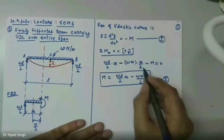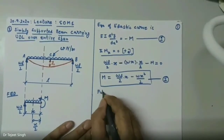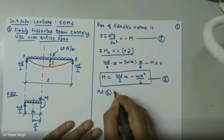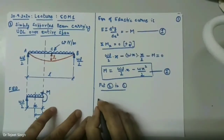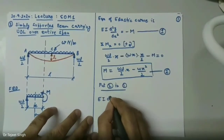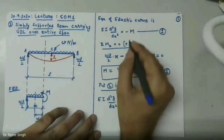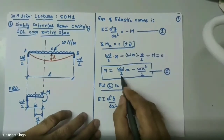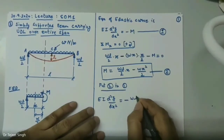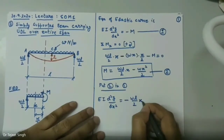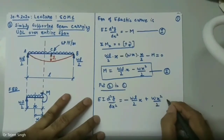Now if we put equation number two into equation number one, we get EI·d²Y/dX² = −WL/2 · X + WX²/2. Multiplying the entire equation by minus gives: EI·d²Y/dX² = −WL/2 · X + WX²/2. I call it equation number three.